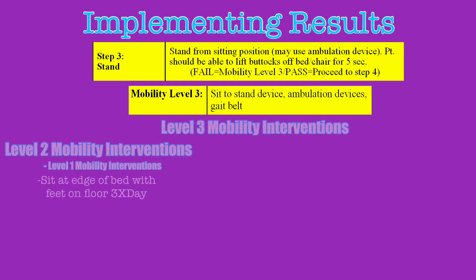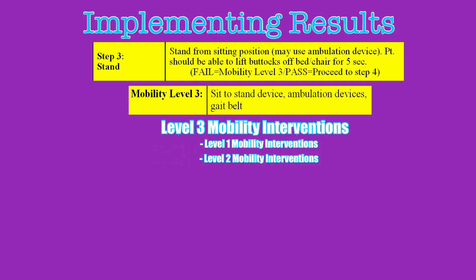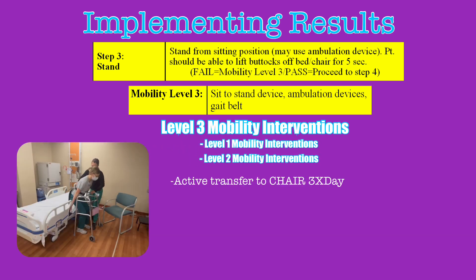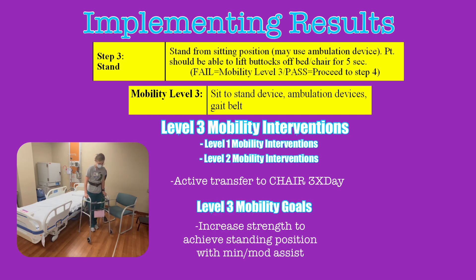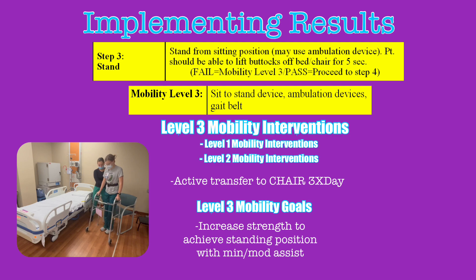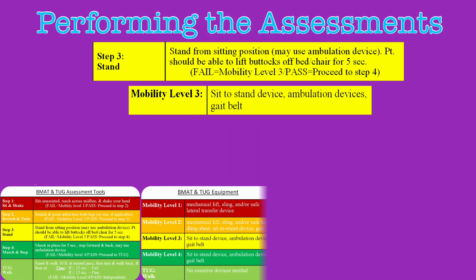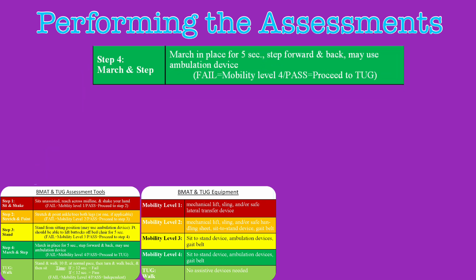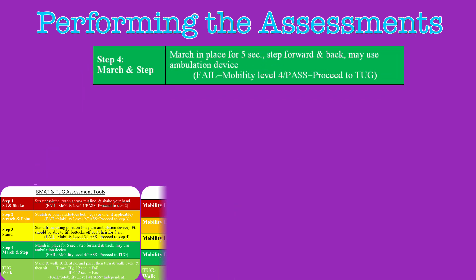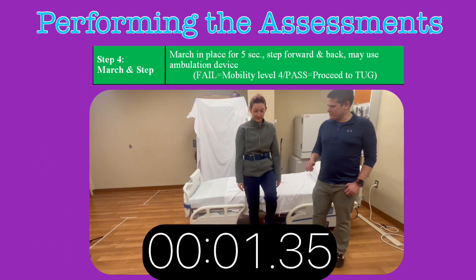The level three mobility interventions include those from level one and level two, as well as active transfers to the chair three times a day. The primary goal of these level three interventions is to increase the patient's strength so they can achieve a standing position with minimal to moderate assistance. If they pass step three, you will progress to step four: march and step.